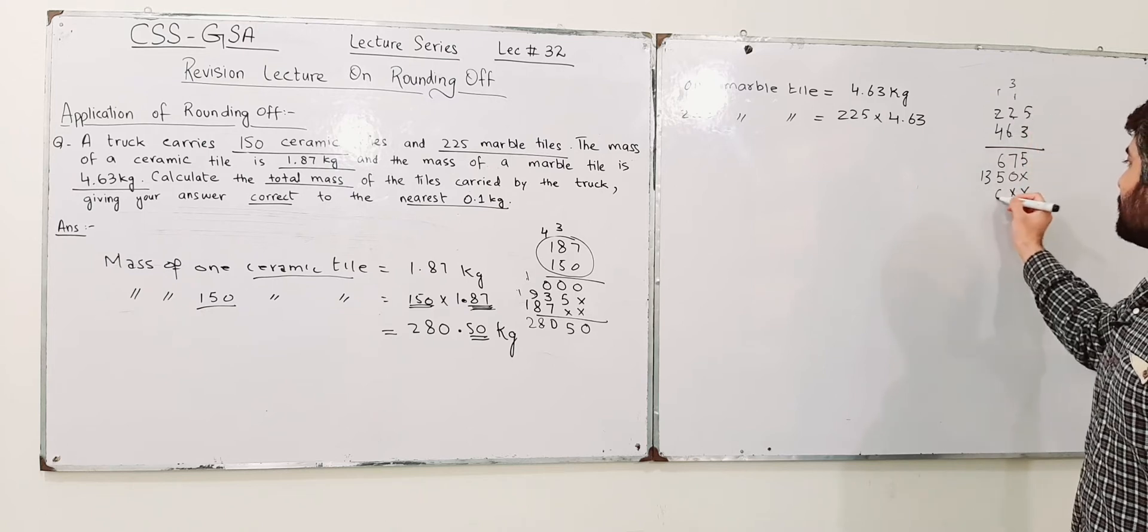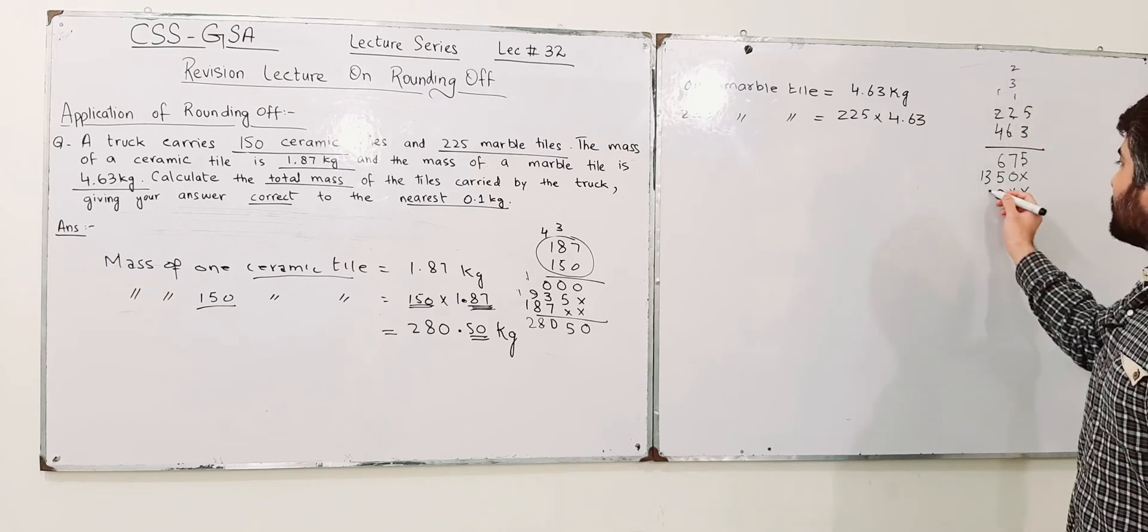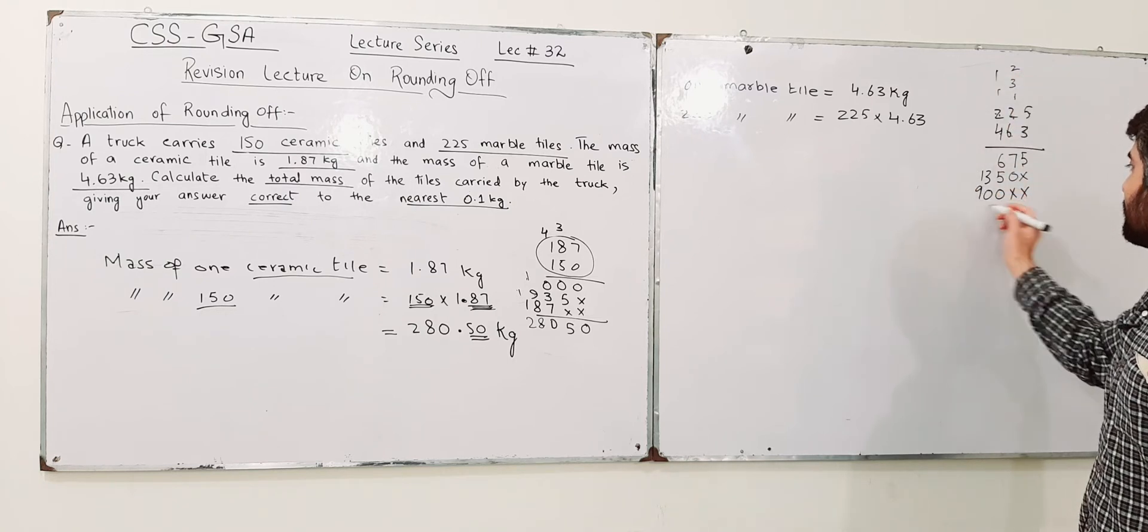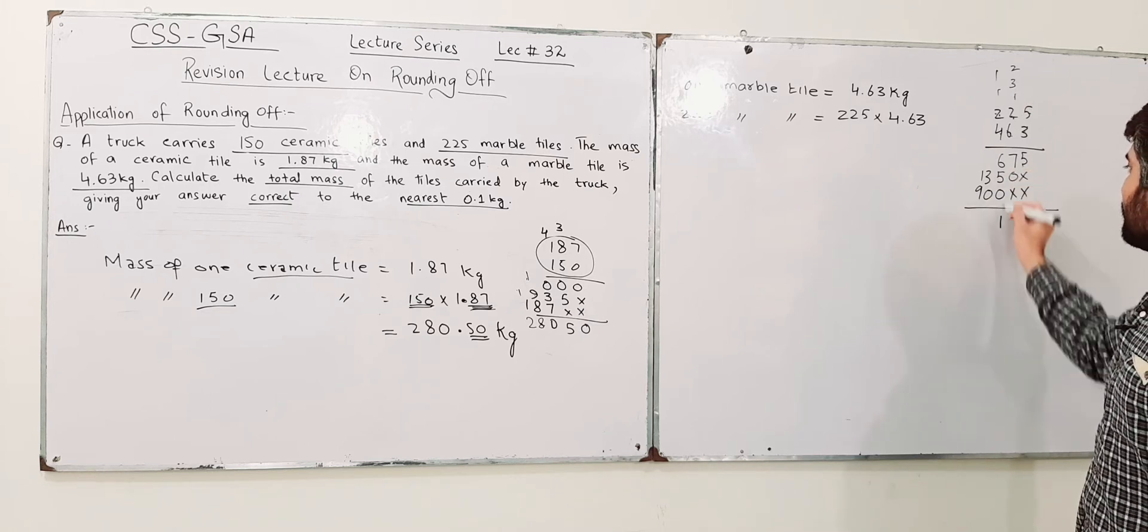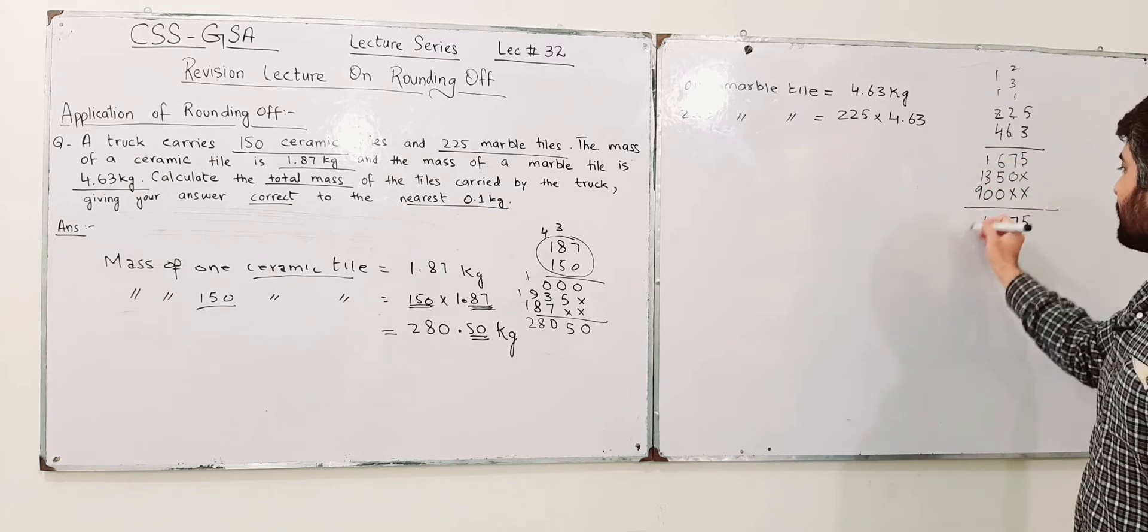4 into 5 is 20, 0, 2, 4 into 2 is 8 plus 2 is 10, 0, 1 over here, 8 plus 1. This is 5, this is 7, 6 plus 5 is 11, 1 over here, 1 over here, 3 plus 1 is 4, 9 plus 1 is 10.